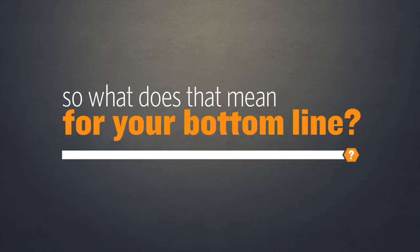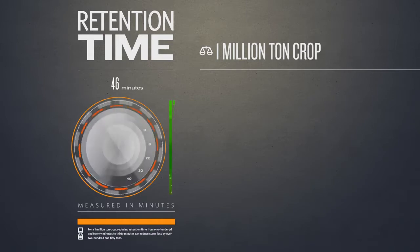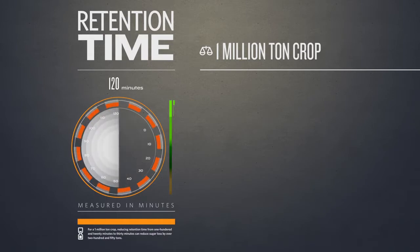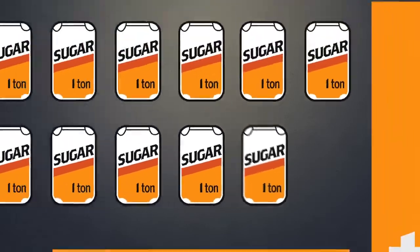So, what does that mean for your bottom line? For a 1 million ton crop, reducing retention time from 120 minutes to 30 minutes can reduce sugar loss by over 250 tons.